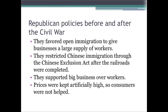The Republicans also favored open immigration, which gave businesses a large supply of workers. The more workers there are, the less they had to pay in wages. They restricted Chinese immigration through the Chinese Exclusion Act after the railroads were completed. They supported big business over workers, and prices were kept artificially high, so consumers were not helped in the end. To summarize, these Republican governments during the Civil War and right after were very pro-business.